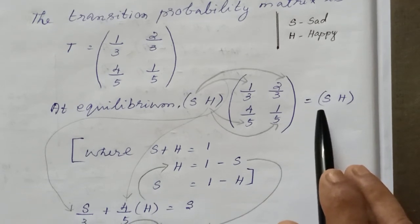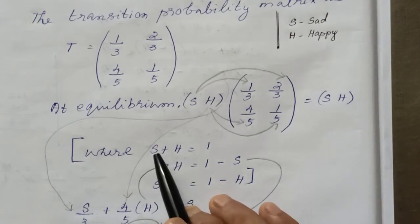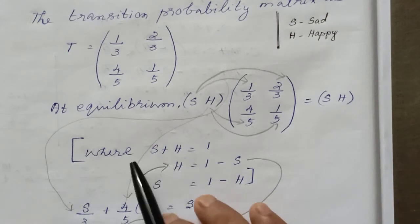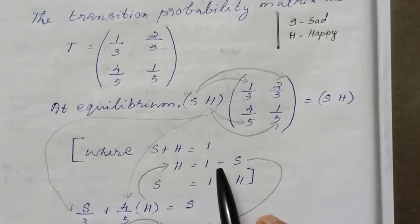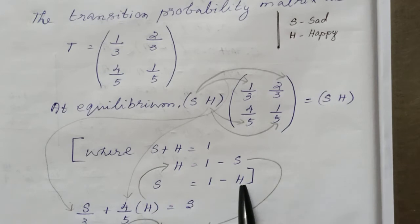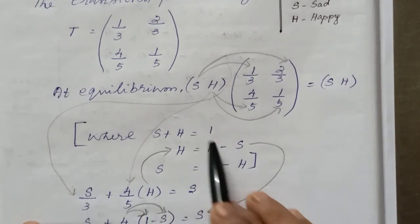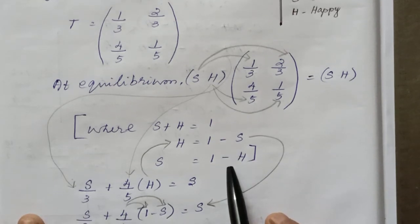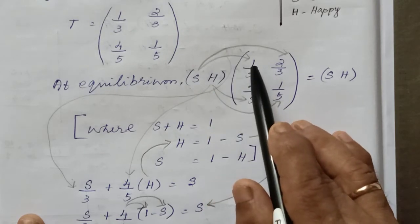We have S plus H. We have a second equation: S plus H is equal to 1. So happy H equals 1 minus S. We are going to sum up.